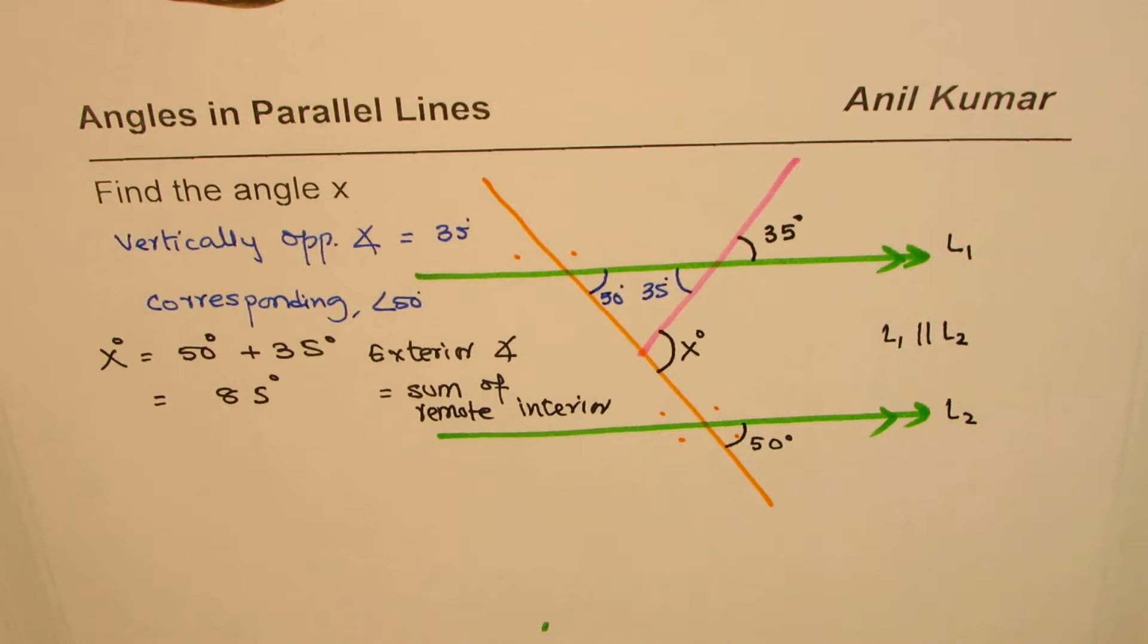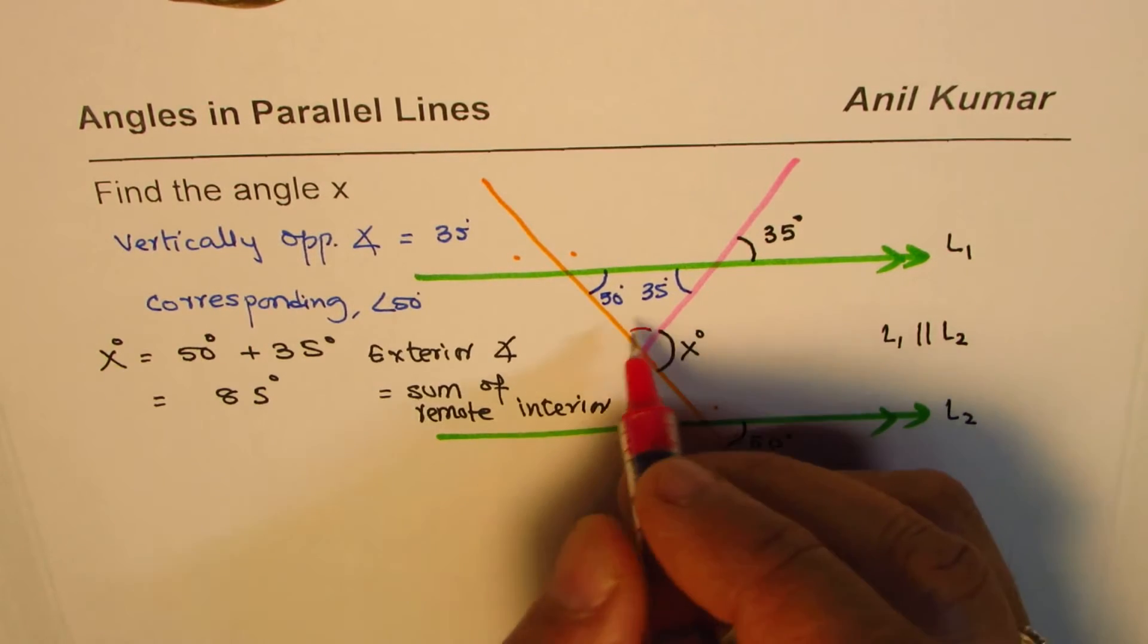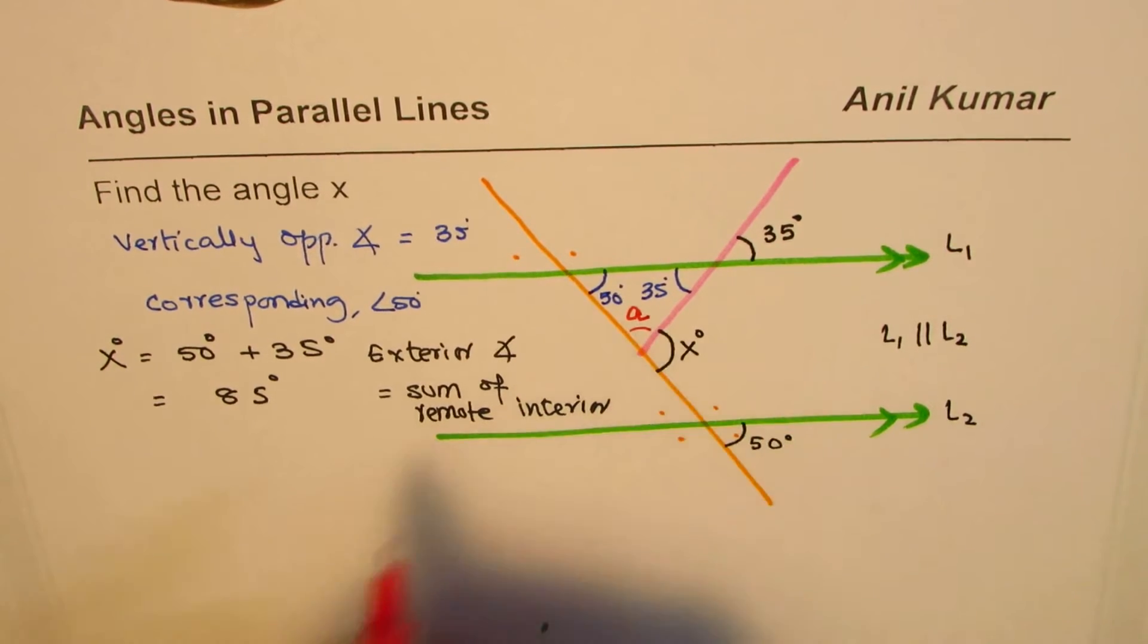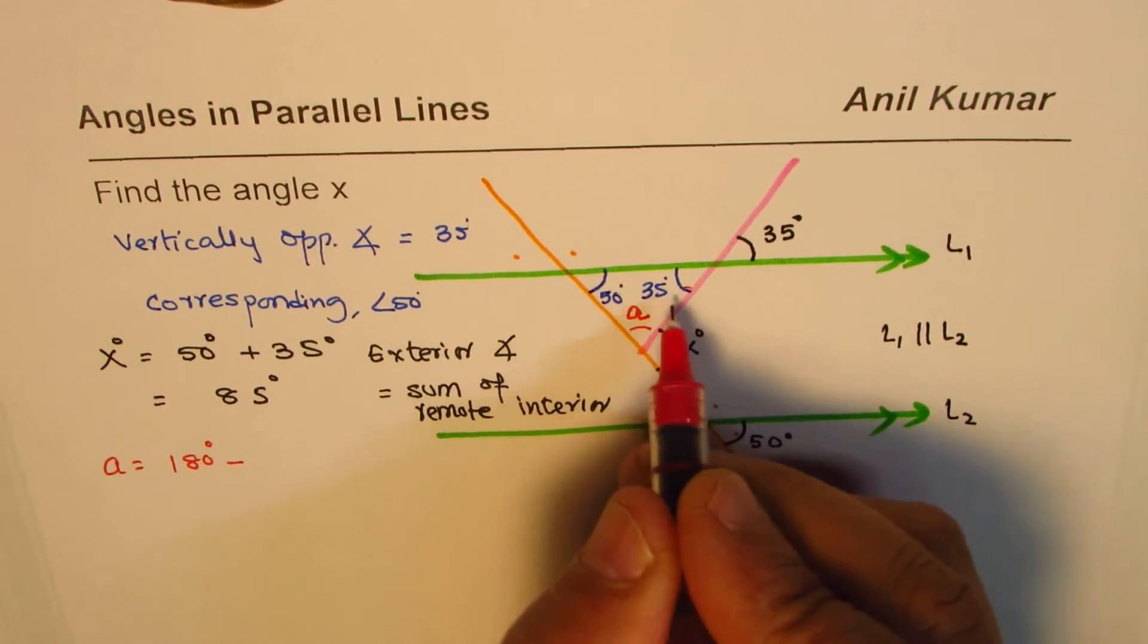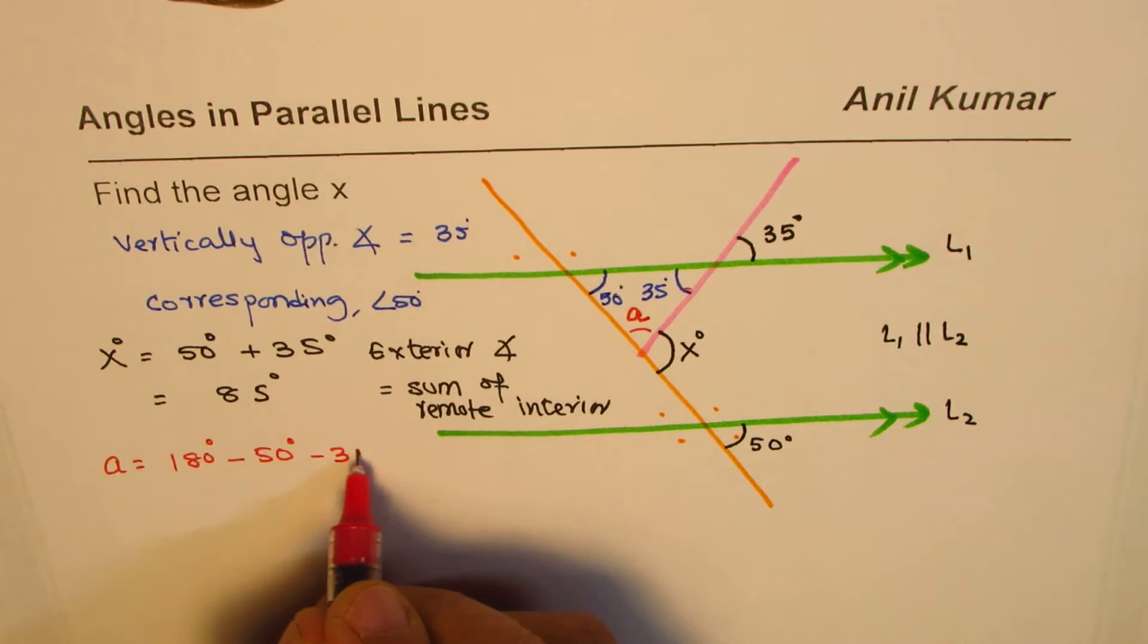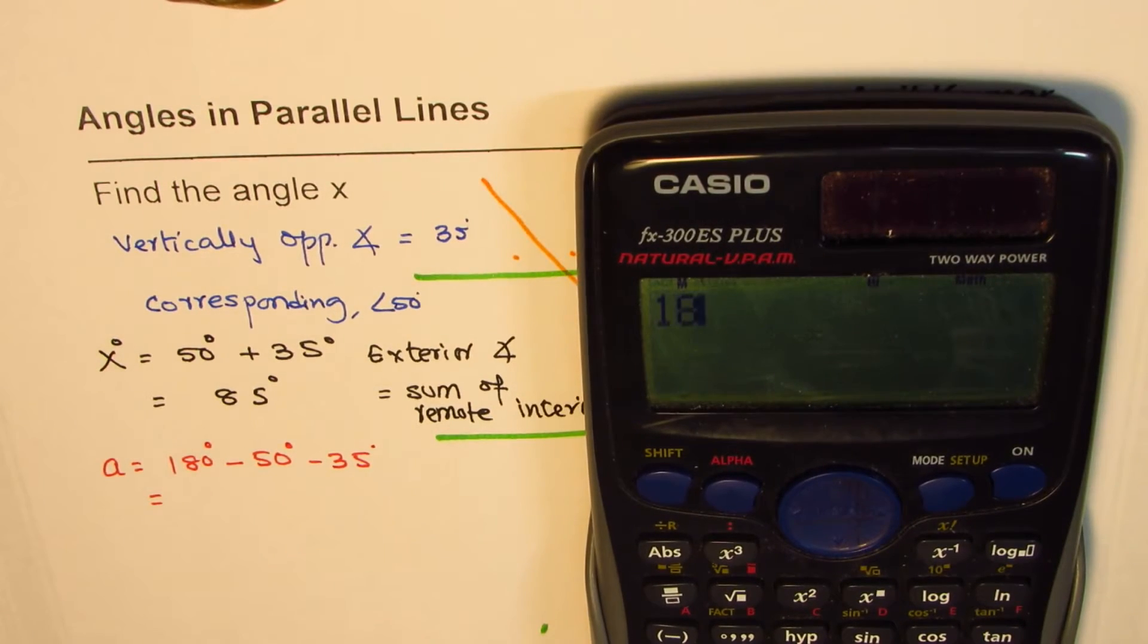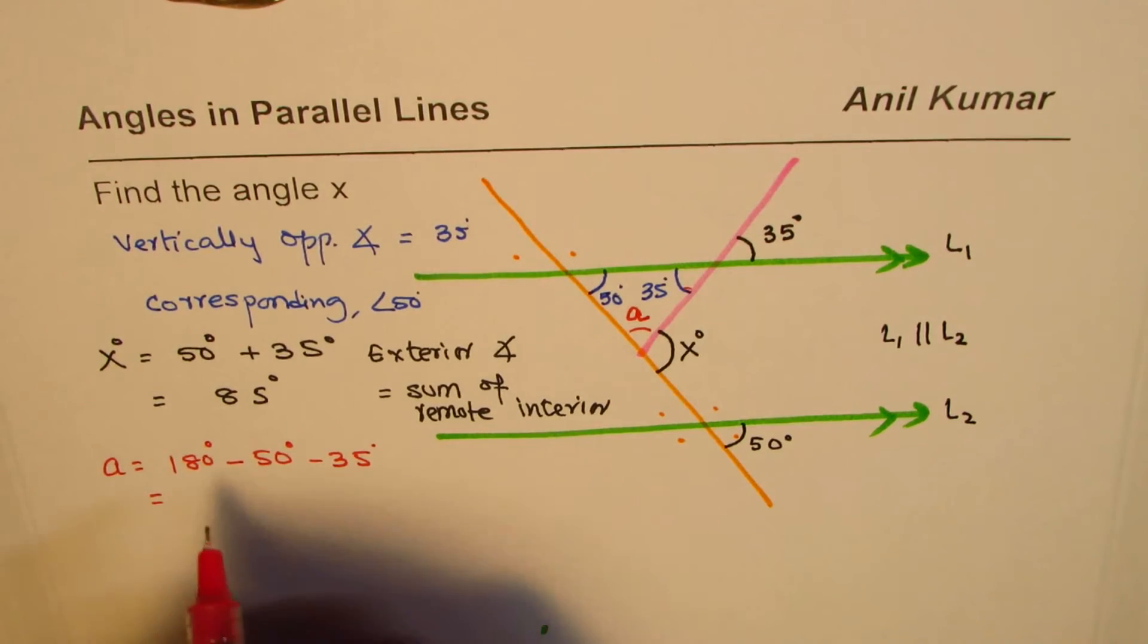The other way could have been that you could find this angle. Let's call this angle as angle a. So in that case angle a will be equals to 180 degrees take away these two, because sum in a triangle is 180 degrees. So we can take away 50 degrees and then 35 degrees. So 180 take away 50 take away 35 equals 95 degrees.